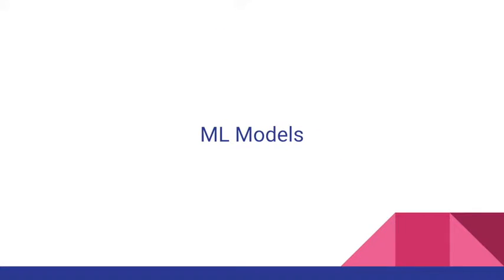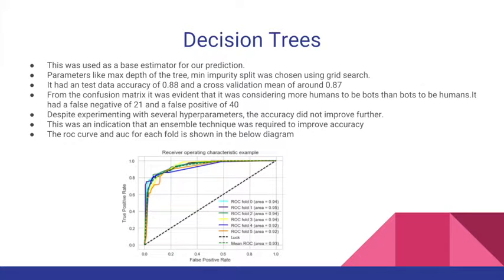All ML algorithm models will now be presented by Revanth Matapoli. The decision tree was used as a base estimator. Parameters like max depth and minimum purity split were chosen using grid search. It achieved a test data accuracy of 88% and a cross-validation mean of around 87%. From the confusion matrix it was evident it was classifying more humans as bots than bots as humans, with a false negative of 21 and a false positive of 40. Despite experimenting with several hyperparameters the accuracy did not improve further, indicating that ensemble techniques were required.